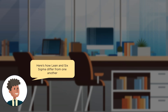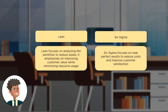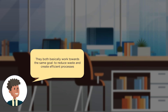Let's talk about how Lean and Six Sigma are different from one another. The Lean methodology aims to reduce waste by analyzing the workflow, minimizing resource usage, and improving customer value. Six Sigma aims to provide near-perfect results — reducing costs and improving customer satisfaction. Basically, both are moving towards the same goal: to reduce waste and create efficient processes.